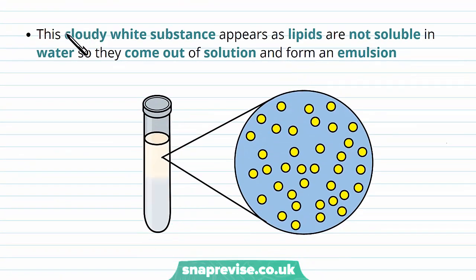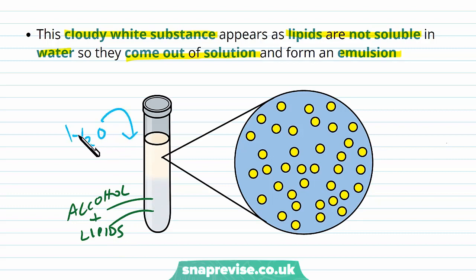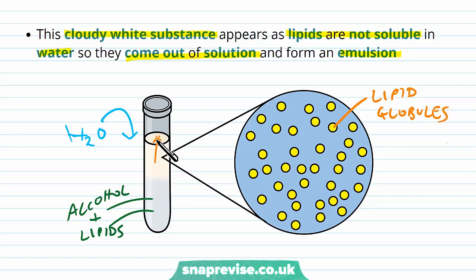The reason we get this cloudy white substance is because the lipids aren't soluble in water. They simply come out of solution and form their own emulsion at the top of the test tube. Initially with the alcohol, the lipids were happily dissolved, but when we added the water they're not able to dissolve because they're very hydrophobic molecules. So they start leaving the water and we see a collection of lipid globules separated from the water and rising to the top, forming this cloudy white substance.